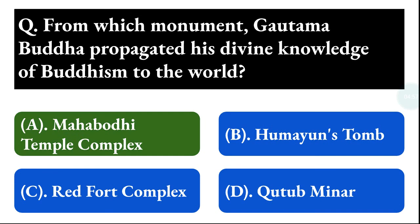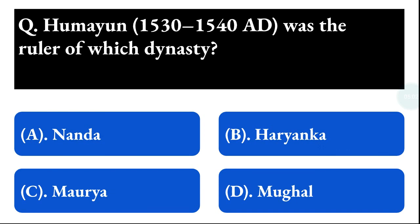Next question: Humayun (1530 to 1540 AD) was the ruler of which dynasty? Option A: Nanda, option B: Haryanka, option C: Maurya, option D: Mughal. The correct answer is option D, that is Mughal.